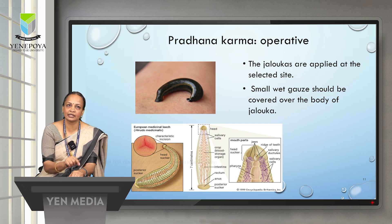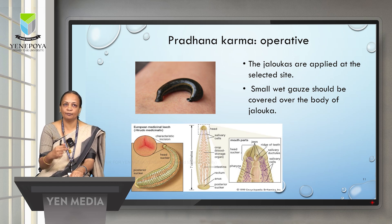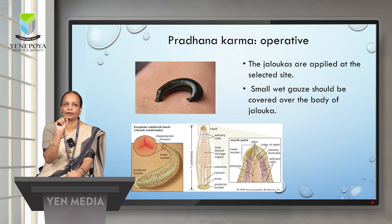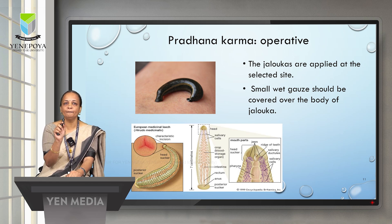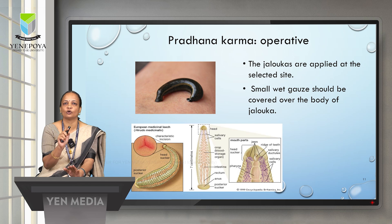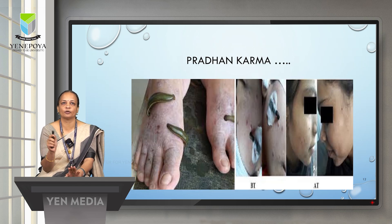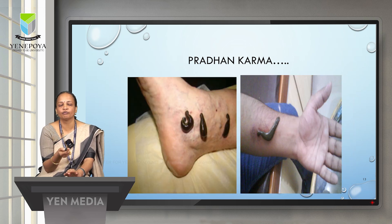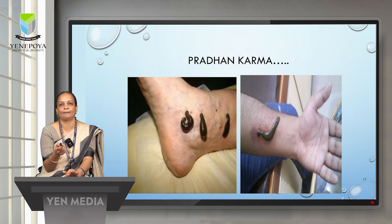When the Jalokavacharana attaches, it fixes its suckers on both the anterior and posterior sides and pulsation can be seen at the neck area. Since Jalokas require cold conditions, the leech must be covered with wet gauze throughout the procedure. Photographs show patients of eczema, acne vulgaris, varicose veins, and inflammation being treated with Jalokavacharana.